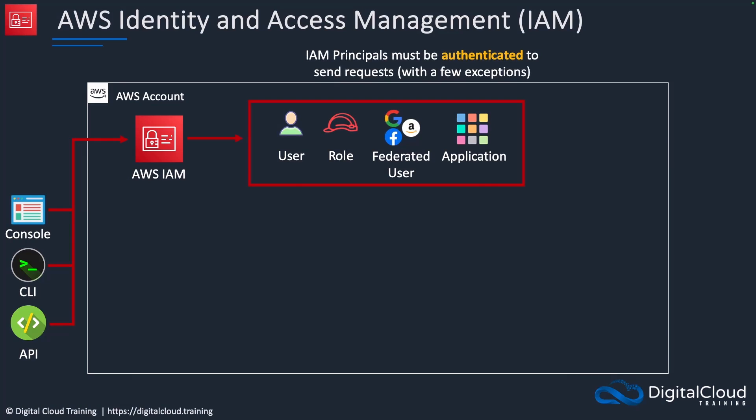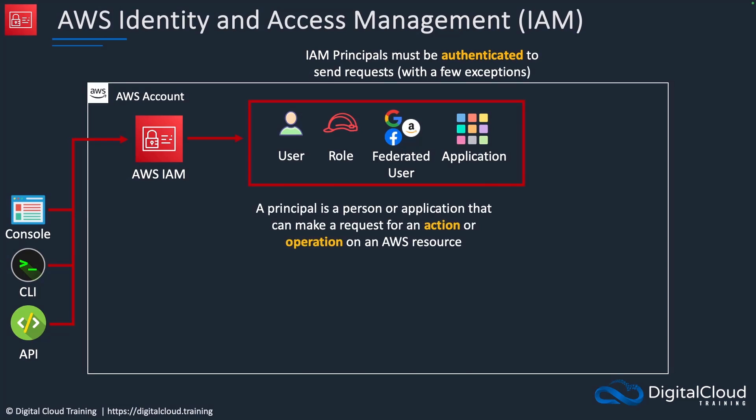All IAM principals must be authenticated to send requests — in other words, to send any kind of API request to AWS. A principal is a person or application that makes a request for an action, that's an API action or operation on an AWS resource.